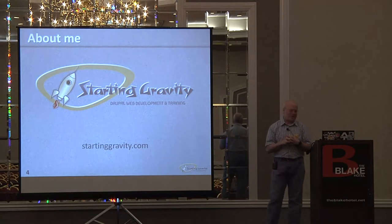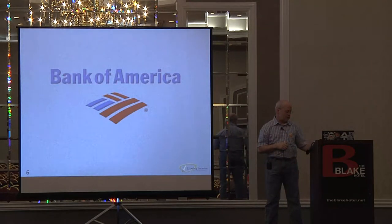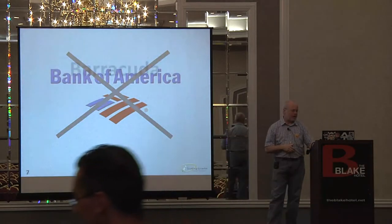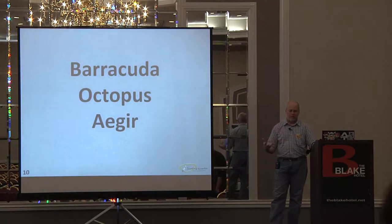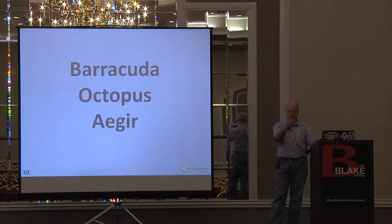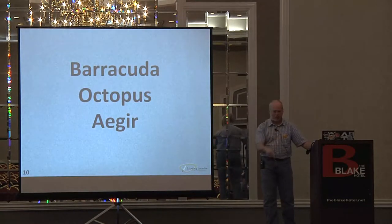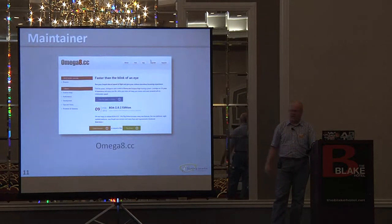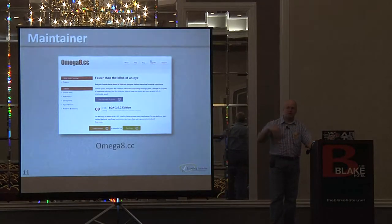Today we're going to talk about what's sometimes referred to as BOA — and no, it is not Bank of America. What we're talking about is Barracuda, Octopus, and Aegir. Some of you are probably familiar with Aegir. What Omega 8CC has done is taken the idea of Aegir and made it not only more robust, but easier to install on any server. It's still at its heart an Aegir system.